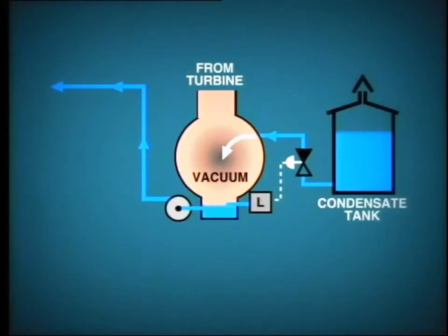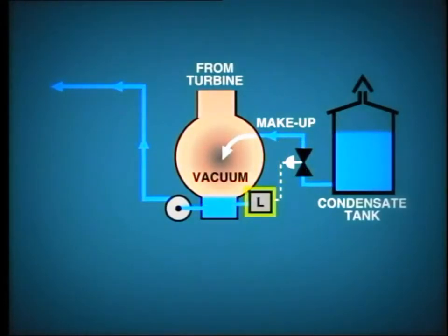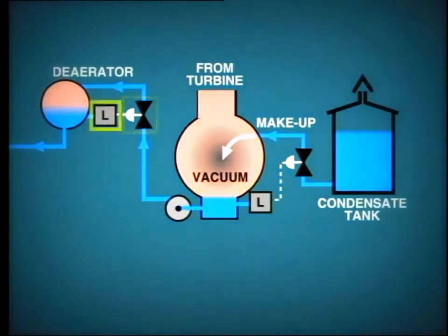Also, how is the level of condensate controlled in the deaerator? This simplified diagram shows how these objectives are achieved. Makeup water from the condensate tank is drawn directly into the condenser through this modulating control valve, which in turn is adjusted according to the level transmitter located at the hot well. Similarly, the flow of water into the deaerator is determined by this particular control valve, which is controlled by signals from the level transmitter at the deaerator.